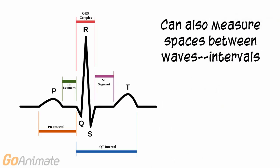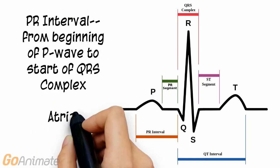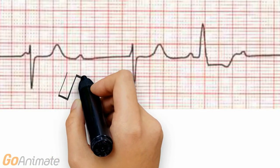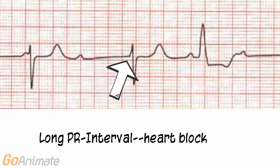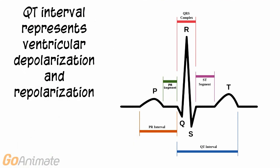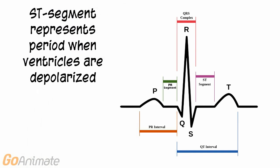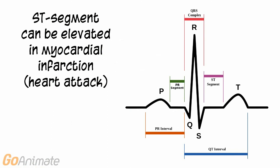We can also measure the spaces between the waves. These are called intervals or segments. The PR interval is measured from the beginning of the P wave to the start of the QRS complex and represents the time for atrial depolarization. An abnormally long PR interval indicates a heart block. The QT interval represents ventricular depolarization and repolarization. The ST segment represents the period when the ventricles are depolarized, and can be elevated in myocardial infarction or heart attack.